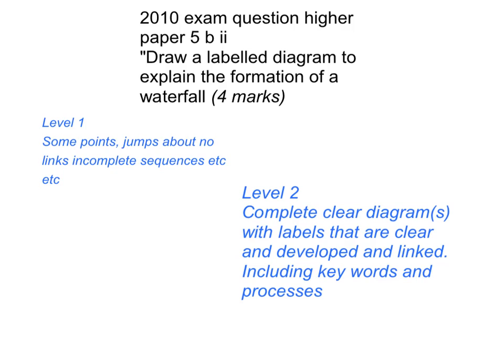A level 1 answer jumps about a bit, might be incomplete, you haven't got the whole sequence, maybe it's not linked together. However, we are not interested in level 1 — everyone should be aiming at level 2. For level 2, you need a complete clear diagram, or maybe two diagrams, with labels that are clear, developed, and linked — what I'd call annotating. It's also really key that you involve keywords and processes. So you don't say 'worn away' or 'falls off' — you talk about erosion, abrasion, hydraulic action and the like.